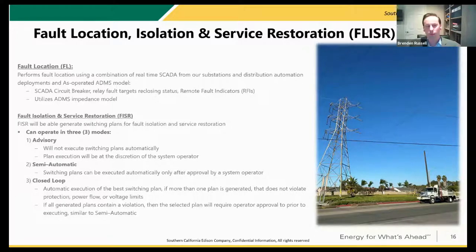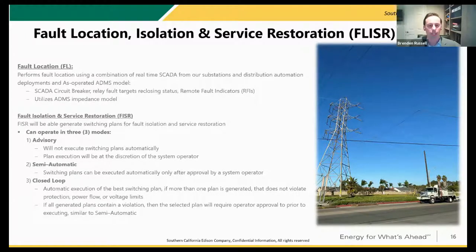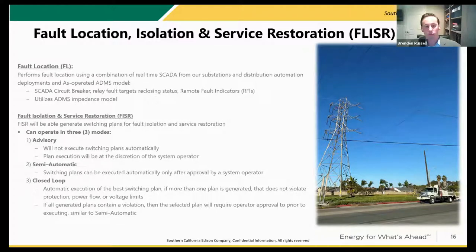We have a two-stage approach to roll this out. We plan to roll out the assisted switching functionality first — the semi-automated FLISR capability will provide a recommendation to the operator, and the operator will then make the final decision to execute that recommendation. Then the closed-loop FLISR is eventually where we want to get to, rolling this out across all our 4,500 circuits at Southern California Edison, where the system identifies the fault and automatically isolates and restores as much power as possible without any operator intervention.